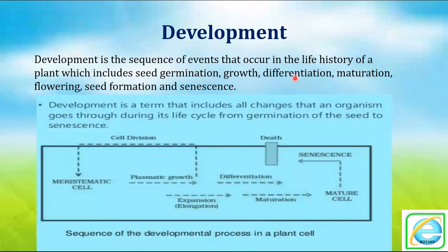Development is the term which includes all the changes that occur in an organism during its life cycle — that means from germination up to senescence, which is the aging of that plant. The number of sequential changes that occur we call development.